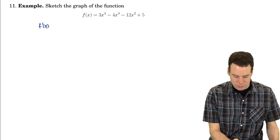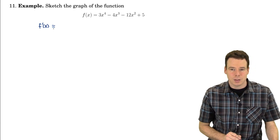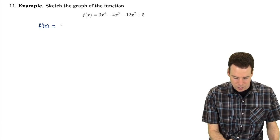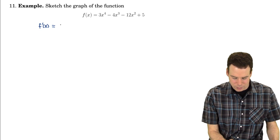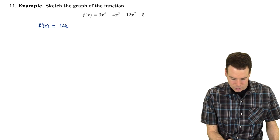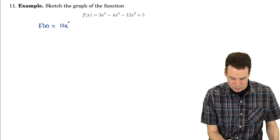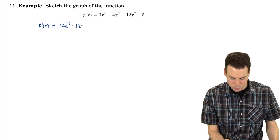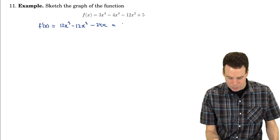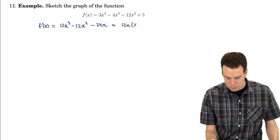In order to sketch its graph, it would be nice to know where it's increasing and decreasing and what the shape of it is. So what's the concavity, and those things require us to know the derivatives and their roots. We've already differentiated this: f'(x) = 12x² - 24x, which factored as 12x(x+1)(x-2).